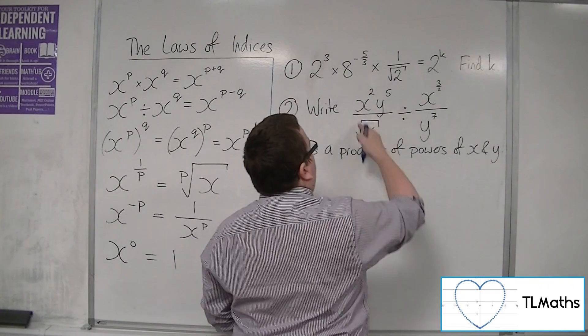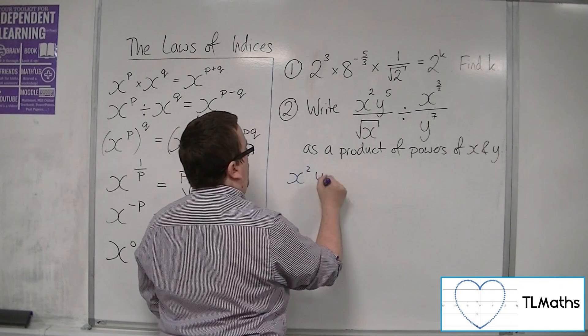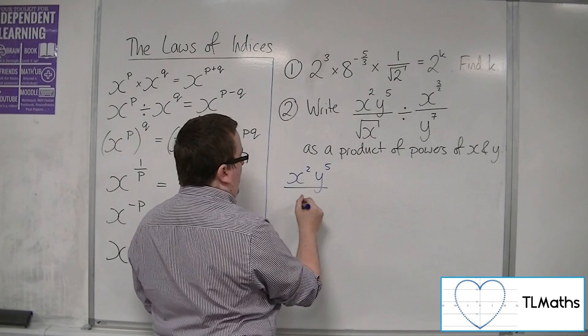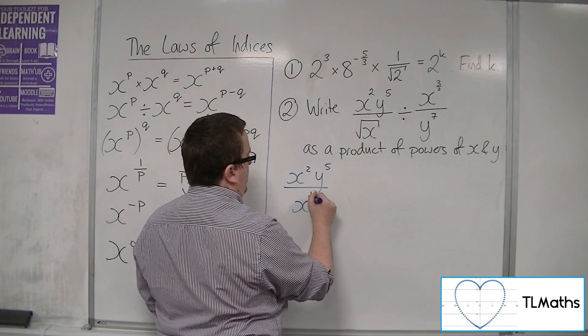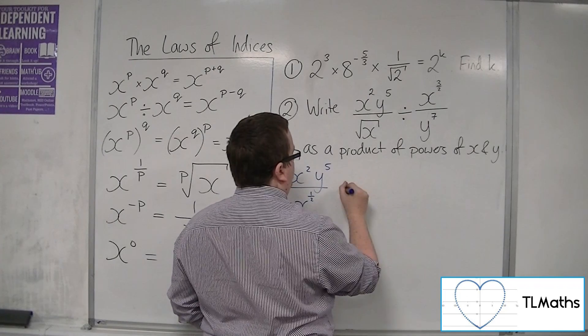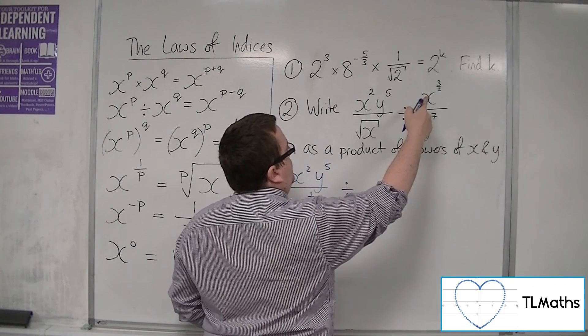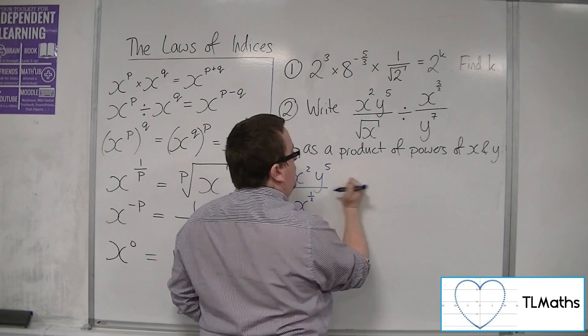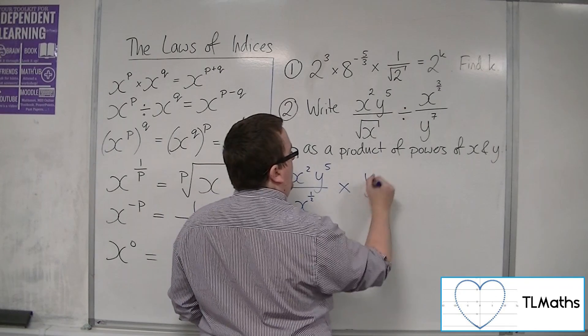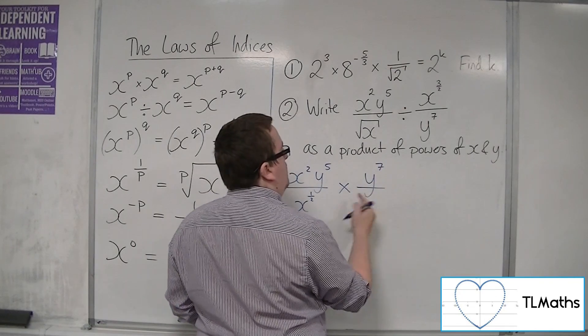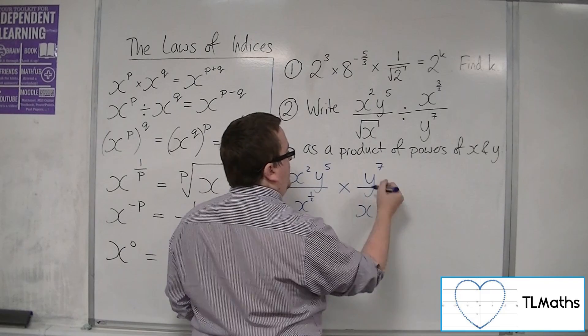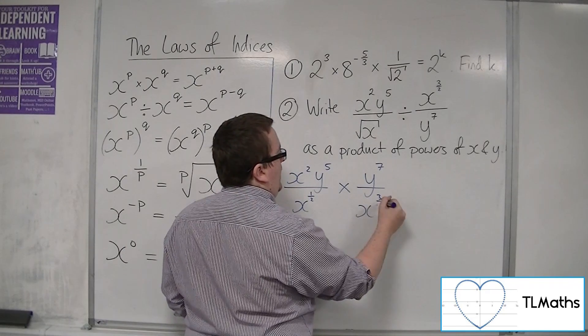If we look at this first fraction, we've got x squared y to the 5 over the square root of x, which is x to the half. Then we've got divide by x to the 3 halves over y to the 7. But if you divide by a fraction, that's the same as multiplying by its reciprocal, so multiply by y to the 7 over x to the 3 halves.